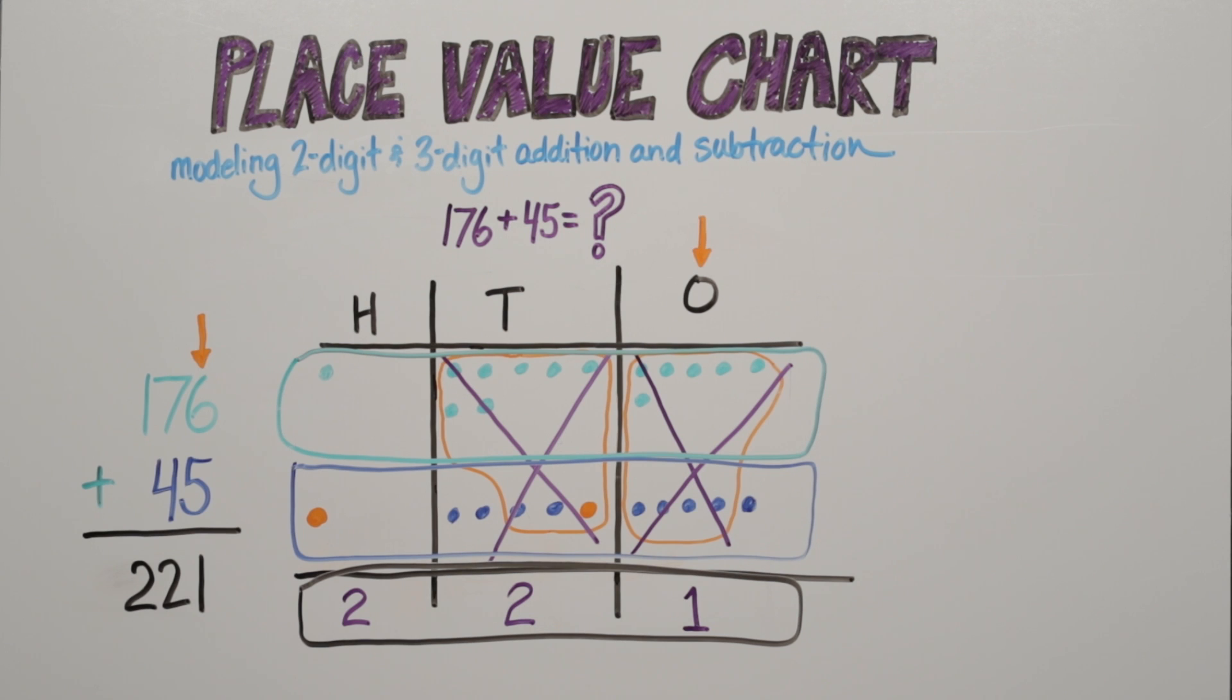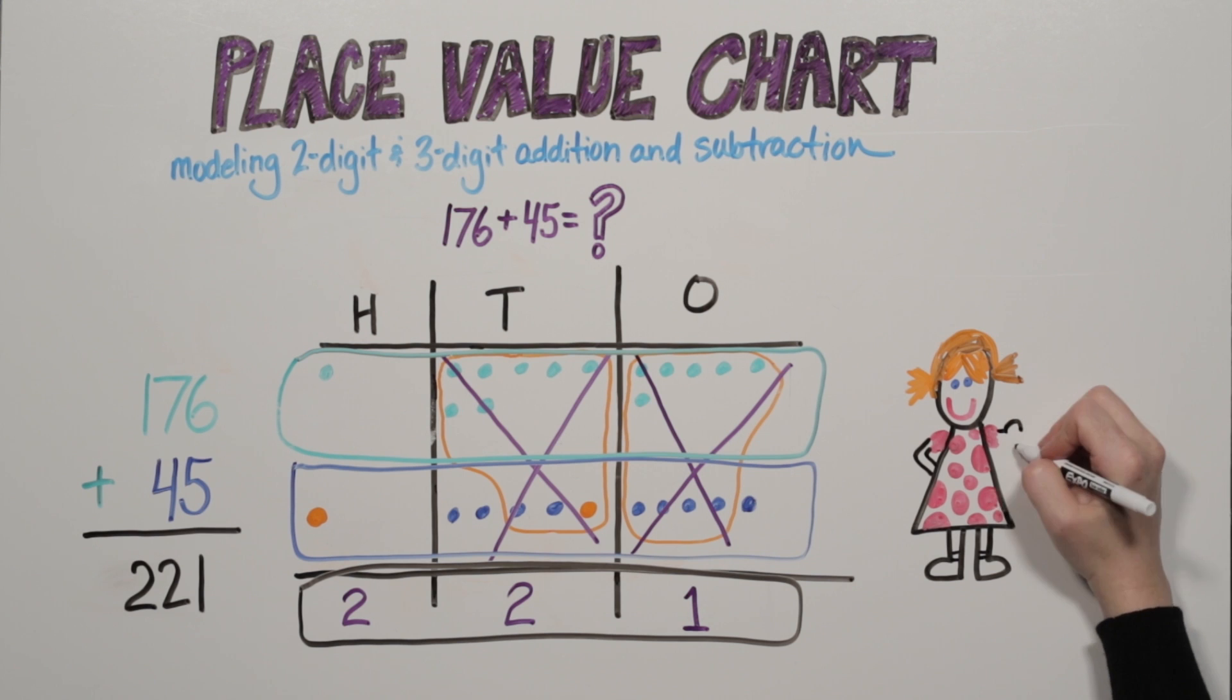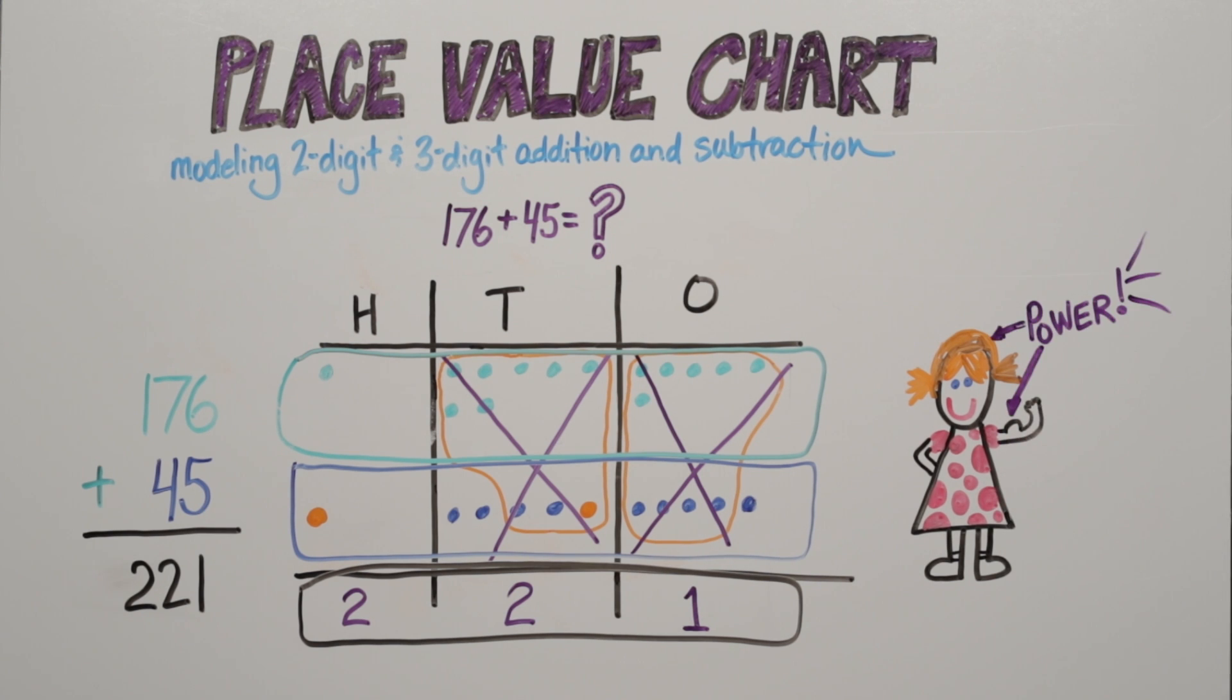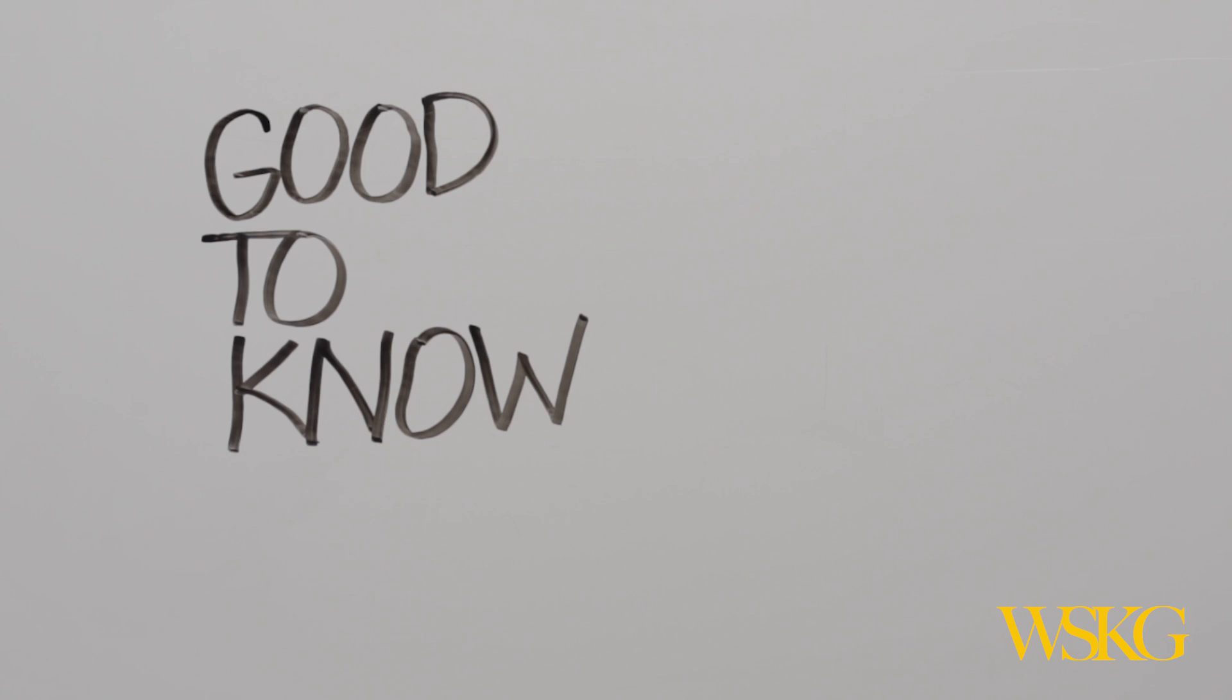If you look closely, a place value chart is a helpful tool to use before your child uses the standard algorithm. The place value chart teaches your child why the standard algorithm works. How powerful! And that's good to know.